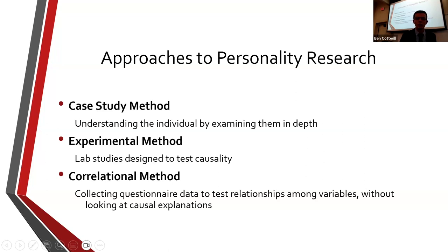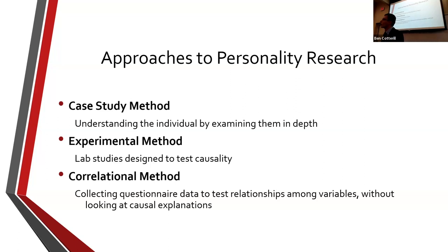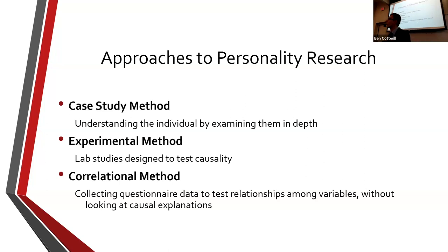The only method that allows us to demonstrate cause and effect or causality is the experimental method. This is when we can test for the impact one variable has because we can make sure everything else is exactly the same. If I'm making a comparison between two groups, everything is the same except for one variable, so if there's a difference in outcomes, it has to be because of that one variable — because it's the only thing that's different.